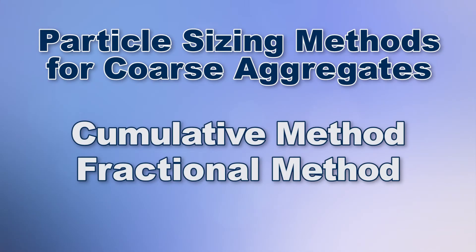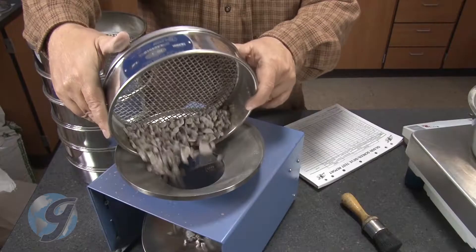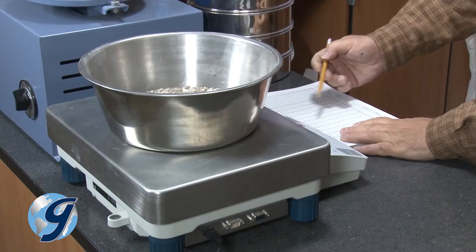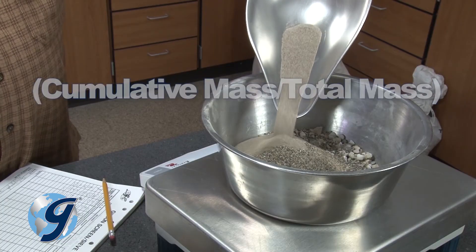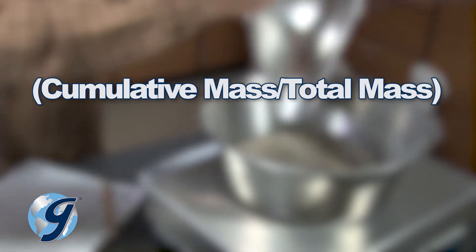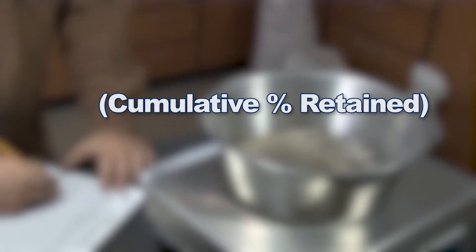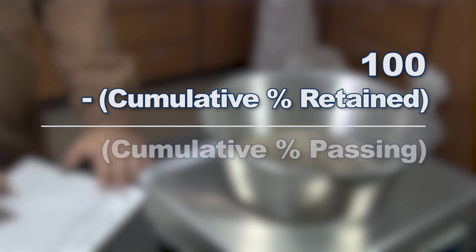The cumulative method and the fractal method. For the cumulative method, each sieve fraction beginning with the coarsest is placed in a previously tared pan and weighed. As each retained fraction is added, divide the cumulative mass by the total mass of the sample and then multiply by 100 to calculate the percent retained. Subtract the cumulative percent retained on a given sieve from 100 to calculate the percent passing.